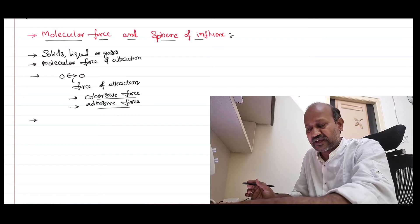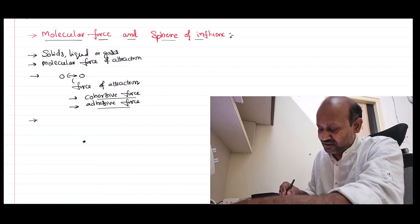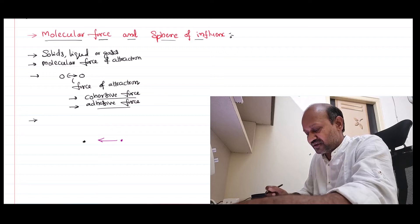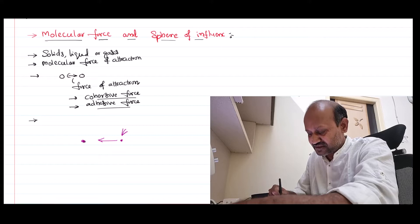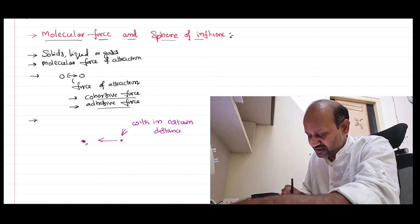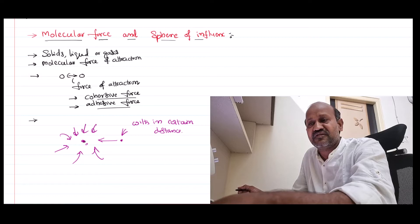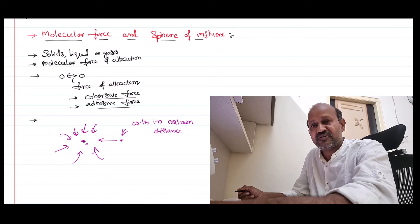To explain surface tension, we need an important concept. Wherever there is one molecule, that molecule can attract the neighboring molecules towards it — but only if those other molecules are within a certain distance. This molecule can influence and attract other molecules only up to a certain limited range. This is like a district collector who has jurisdiction only over their own district — they cannot give orders to other districts.